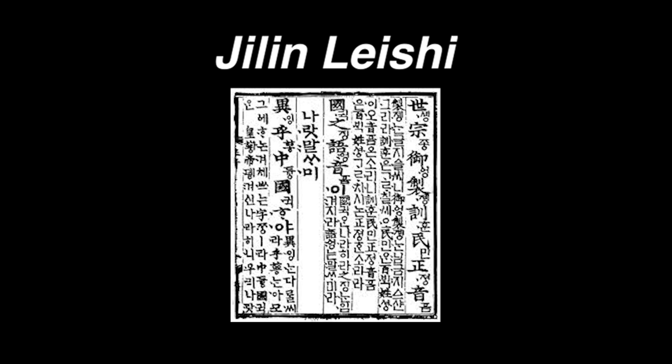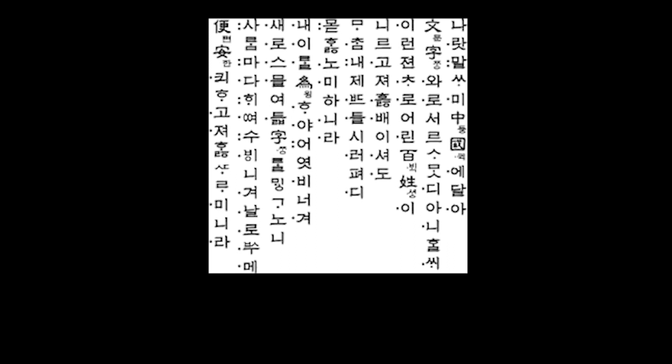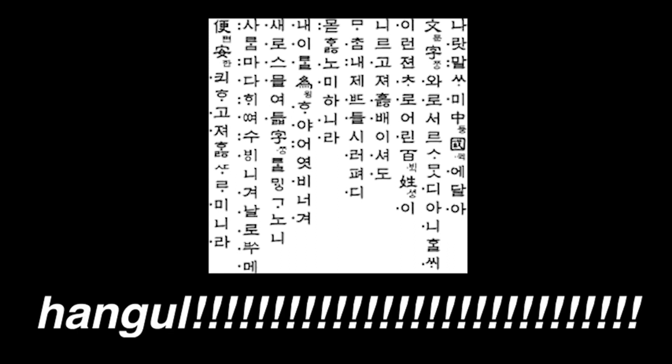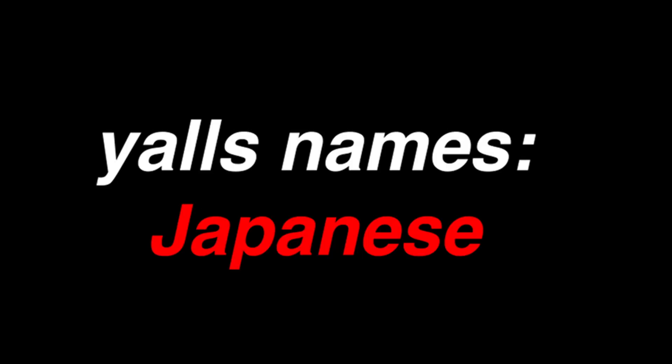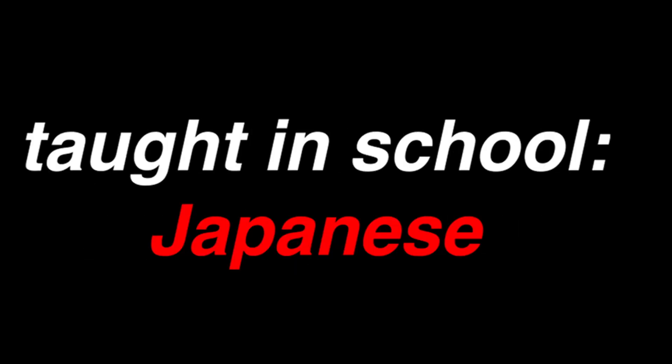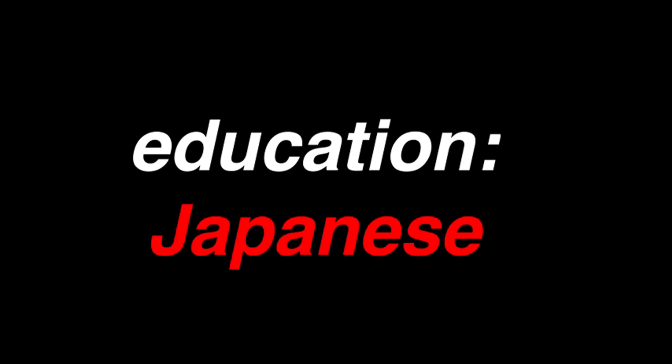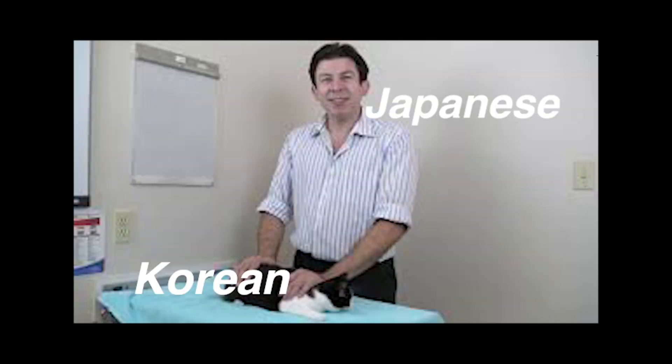The language also had tones, which are no longer seen in Korean, but they were marked in writing. In 1910 began the Japanese occupation of Korea, and Japanese was made the official language. Korean was banned, and people had to change their names to Japanese ones. Japanese started being taught in schools and was the language of education. Despite the suppression of the Korean language, it survived after 1945, which is when the Japanese left.